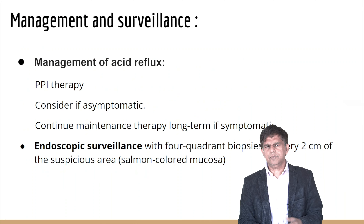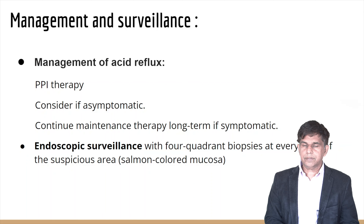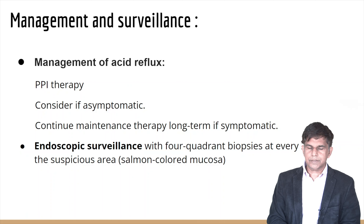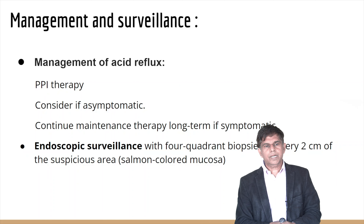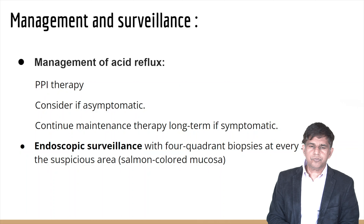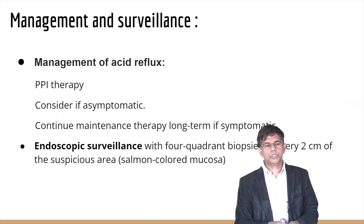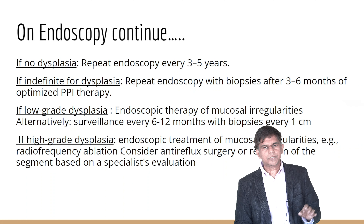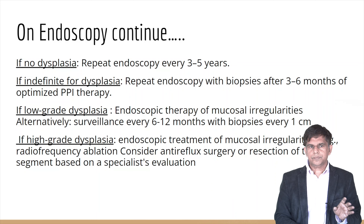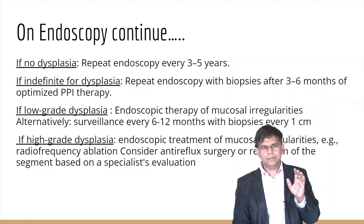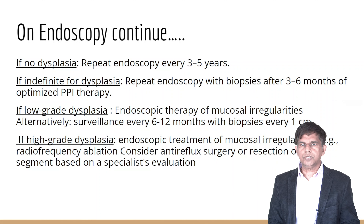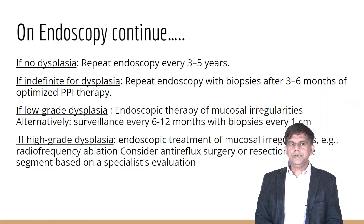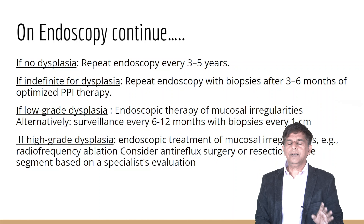For management, the main goal is controlling acid reflux, using a proton pump inhibitor — the most commonly used treatment. Endoscopic surveillance involves four-quadrant biopsies every two centimeters of the suspicious area, which is usually salmon-colored cardiac mucosa. If there is no dysplasia, repeat endoscopy every three to five years.